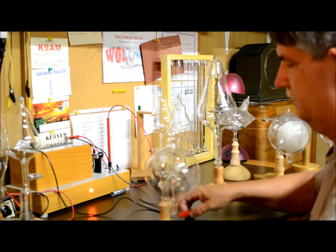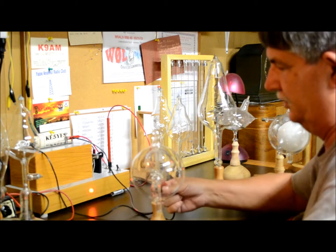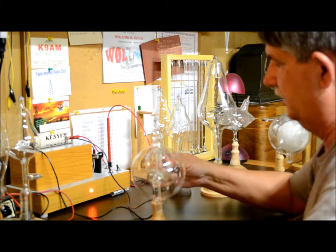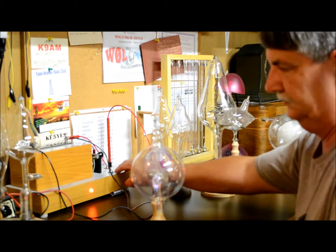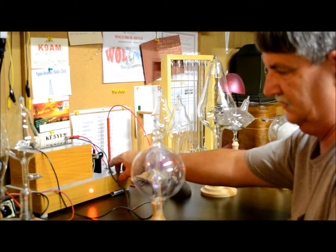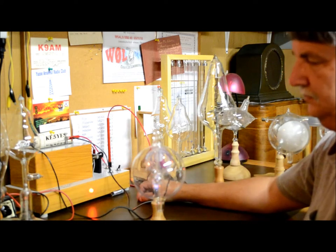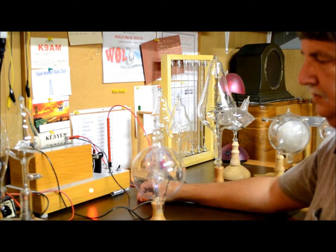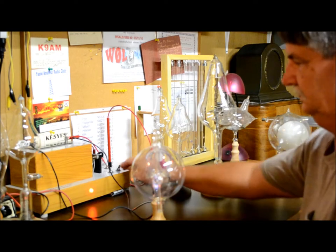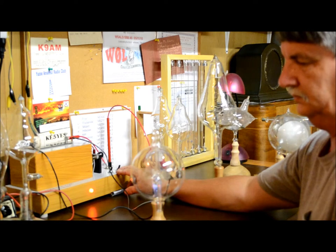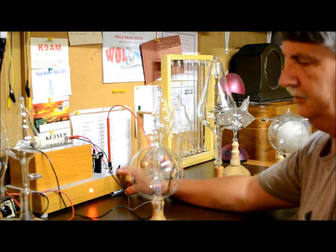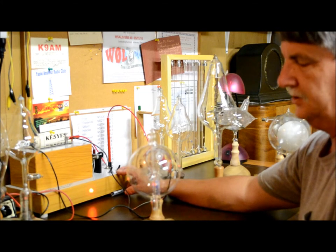This is similar to a radiometer tube that uses sunlight to turn it, but this one uses an electronic beam to do it. Electron beams hit the meter and make it turn.